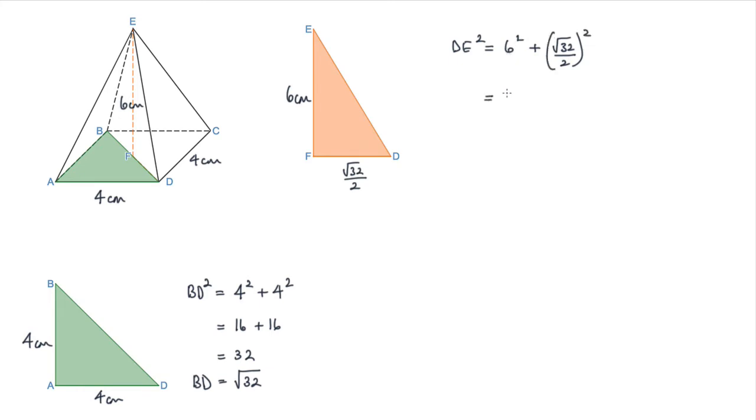6 squared is 36. The square root of 32 squared is 32, and 2 squared is 4. So we've got 36, and 32 divided by 4 is 8, so we've got 44. Therefore DE is the square root of 44.